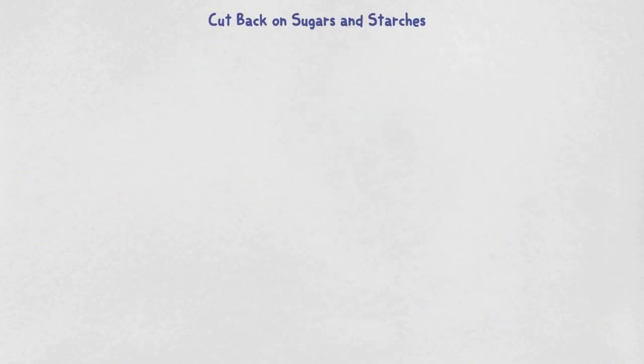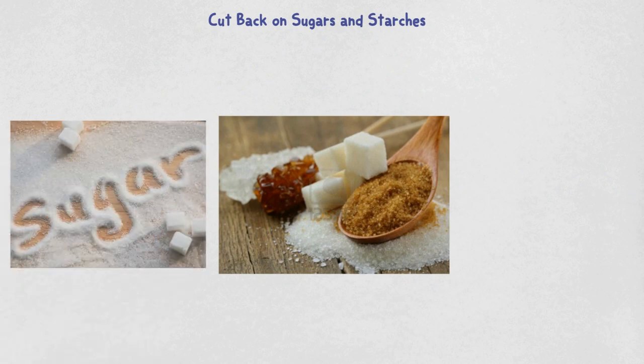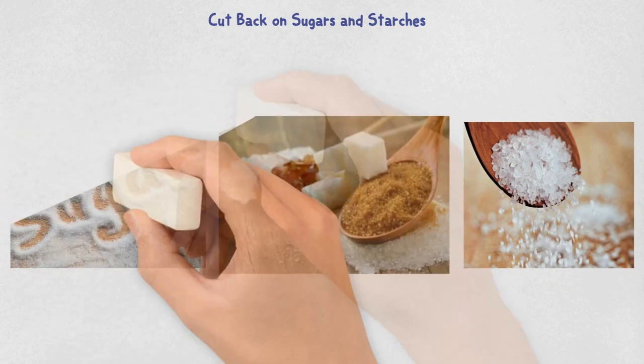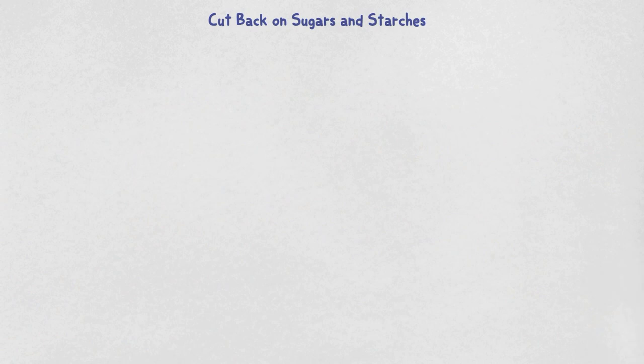Number one, cut back on sugars and starches. The most important part is to cut back on sugars and starches. These are the foods that stimulate secretion of insulin the most. If you didn't know already, insulin is the main fat storage hormone in the body.